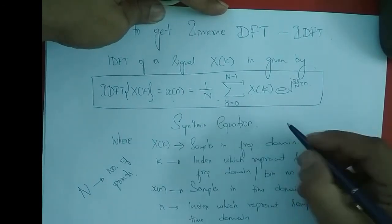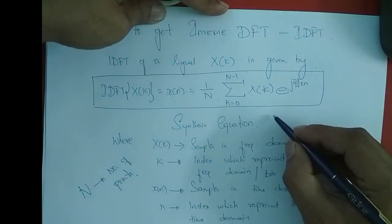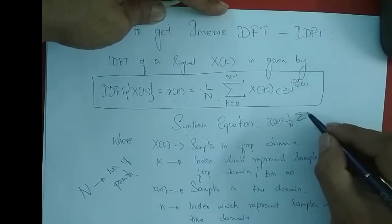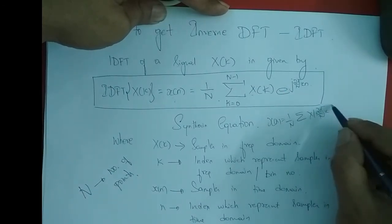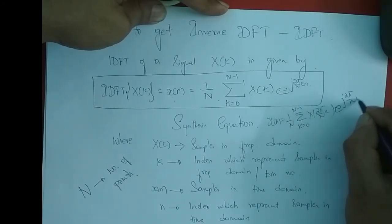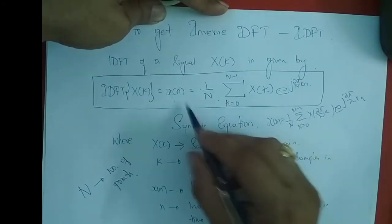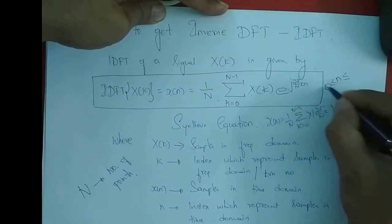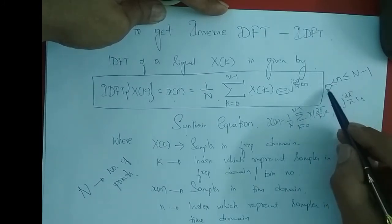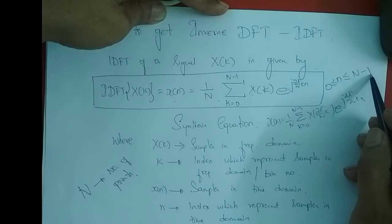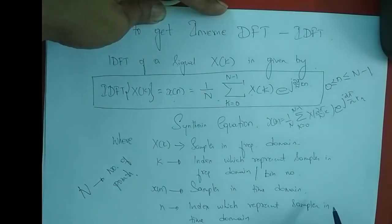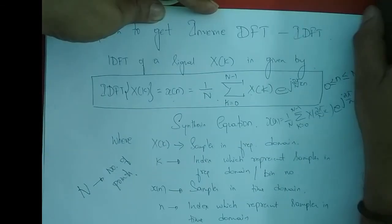From where did we get the IDFT equation? In frequency domain sampling, the equation was: x of n equals 1 by N, summation of x of 2 pi by N into k, where k varies from 0 to N minus 1, times e to the power j 2 pi by N into k n. In the DFT equation k varies from 0 to N minus 1, and here n varies from 0 to N minus 1. So both n and k are varying from 0 to N minus 1. This is about the IDFT equation.